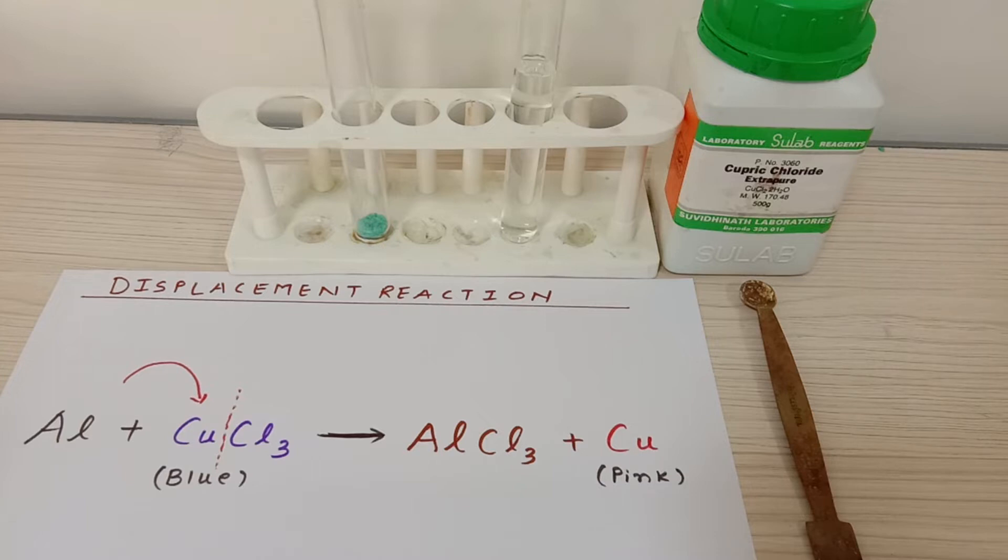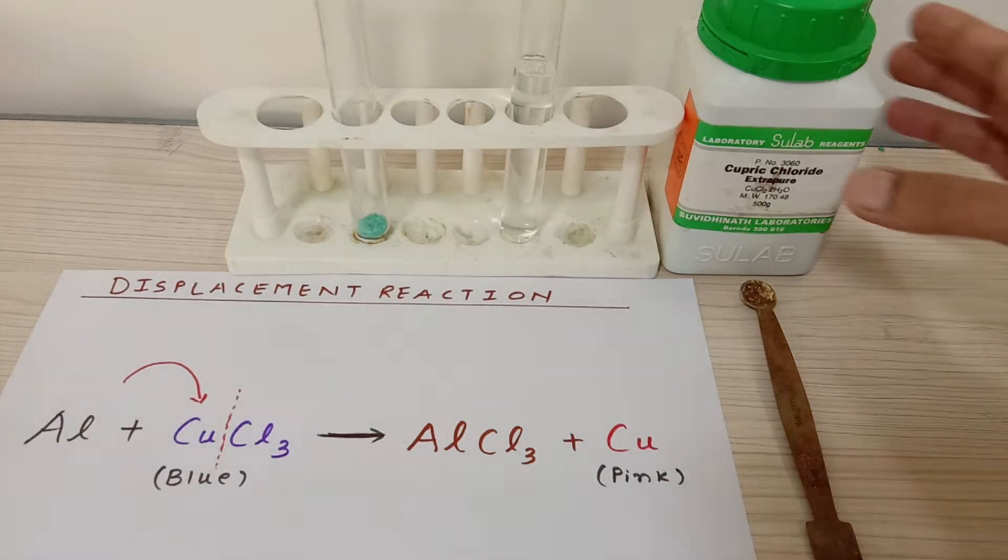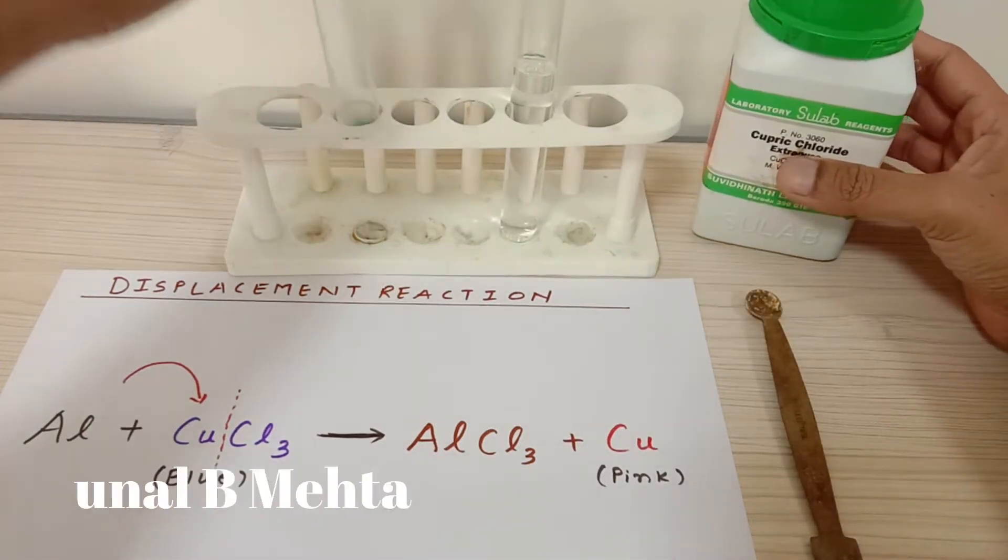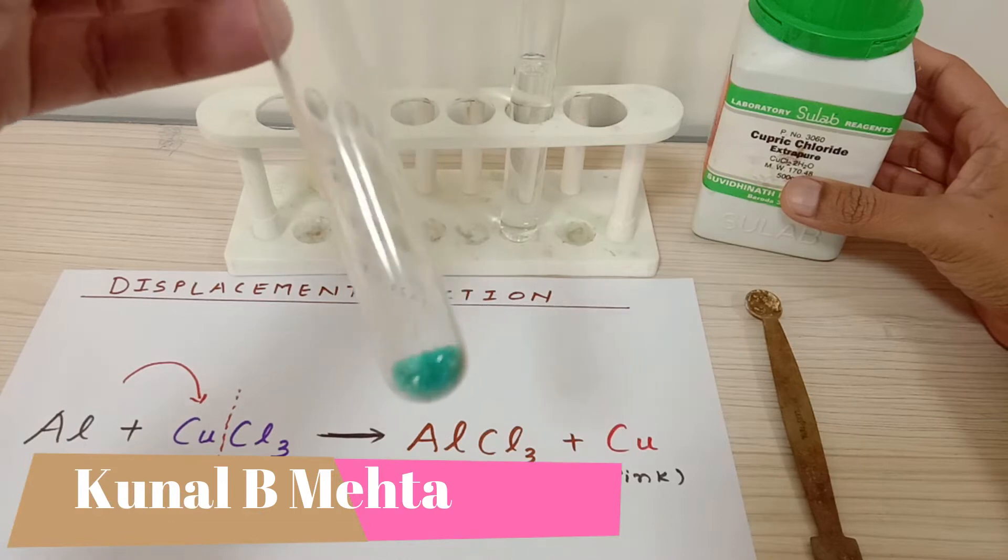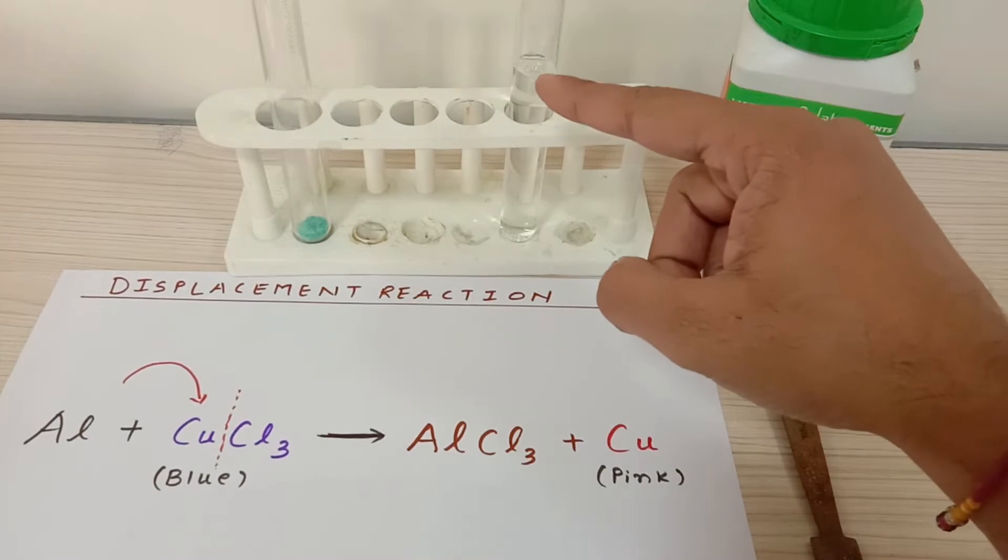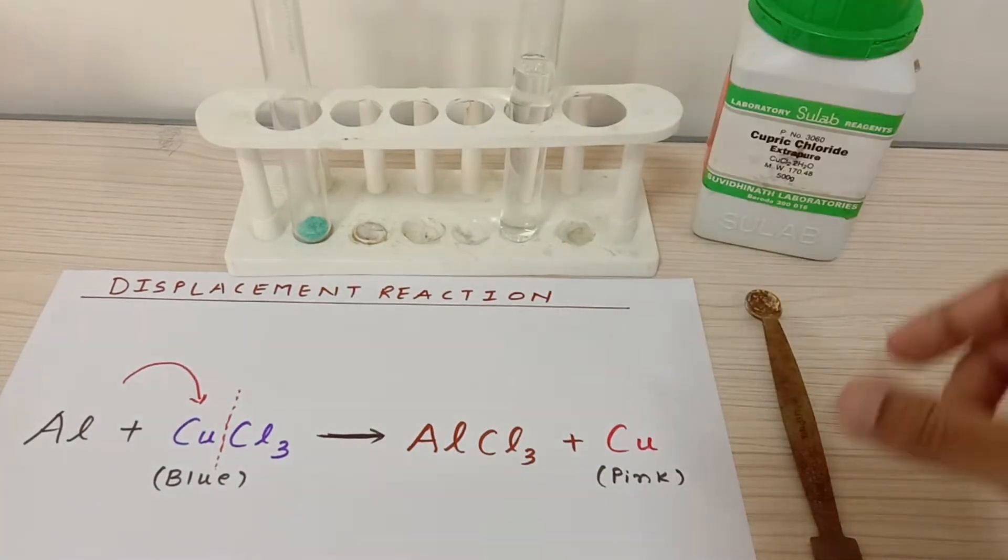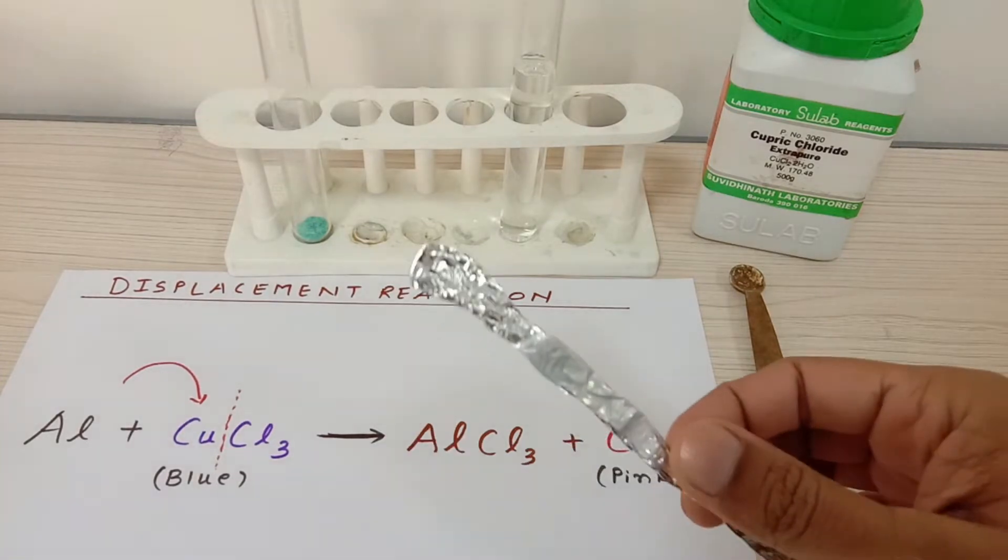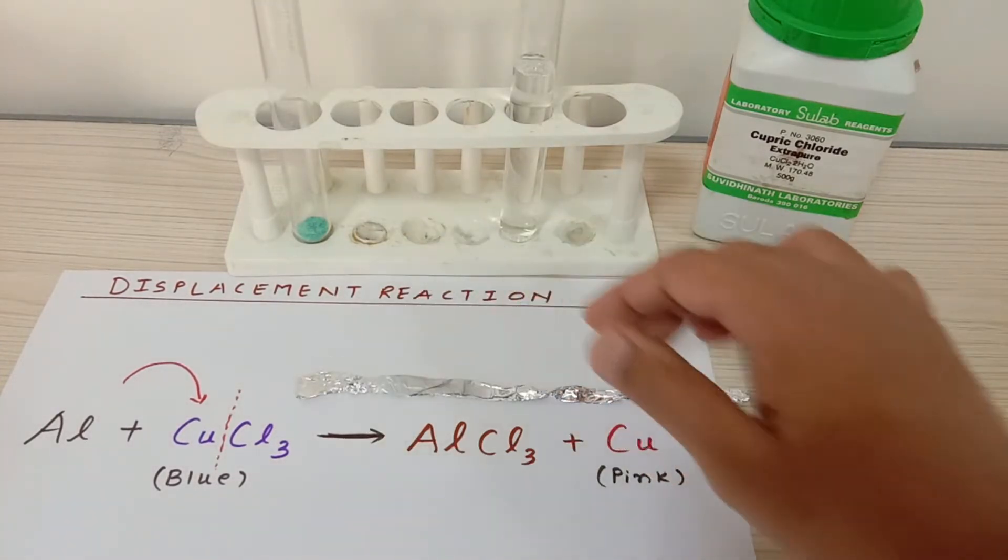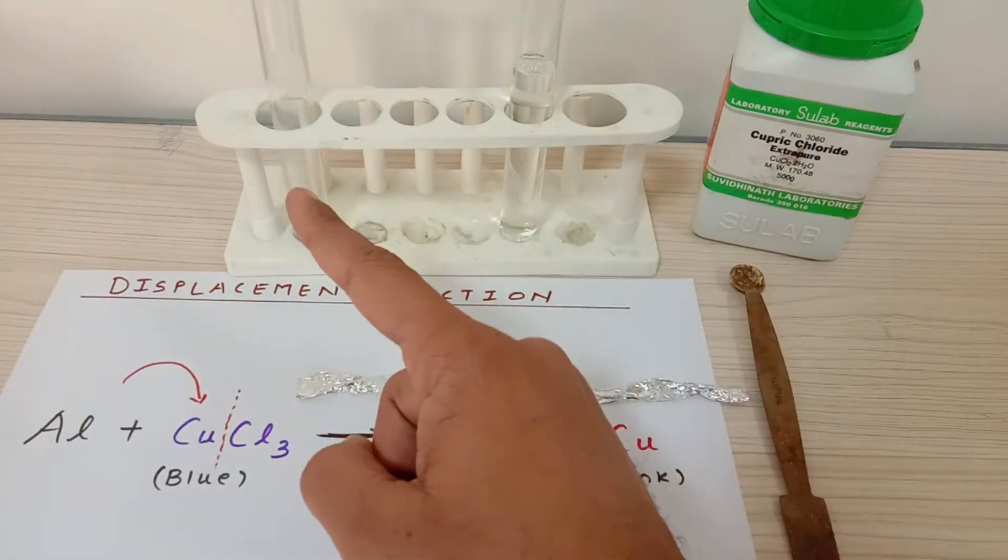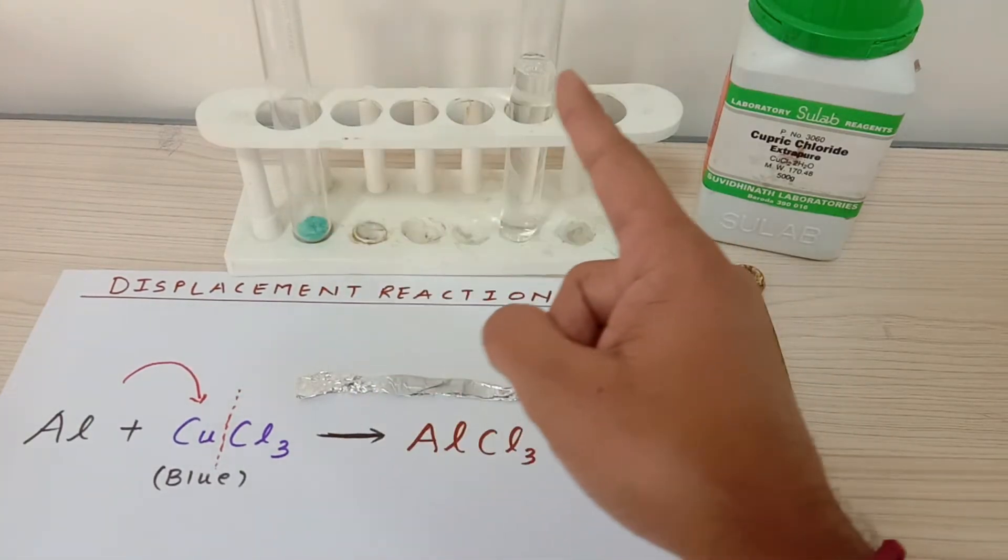Here I have taken cupric chloride, which is a greenish bluish color salt. I have taken some water in a test tube, and I have this spatula and aluminum foil.